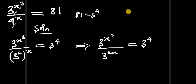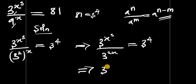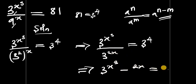If we consider the identity: a to the power of n divided by a to the power of m is simply equal to a to the power of n minus m, we apply this here. So we are going to have 3 to the power of x cubed minus 2x, and this is equal to 3 to the power of 4.